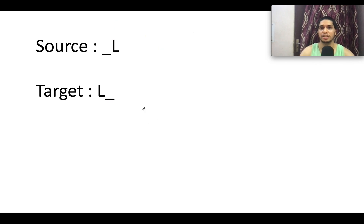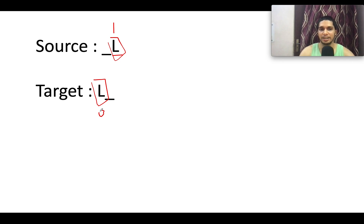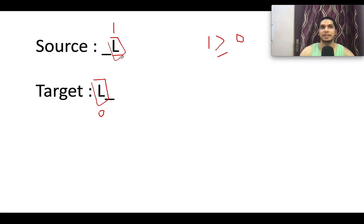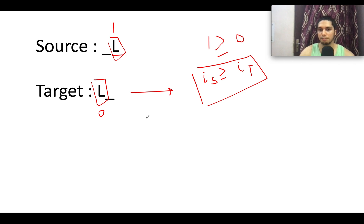For the L character: in the positive case, L is at index 1 in the source string (is=1) and index 0 in the target string (it=0). Since L can only move left and 1 >= 0, the configuration is possible. The condition for L is: is >= it. If this holds true, we return true.